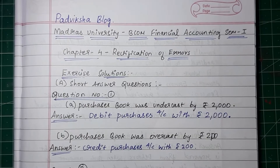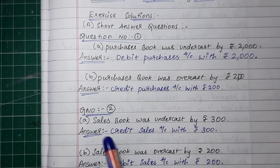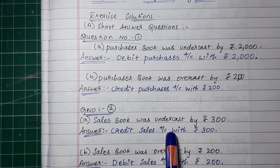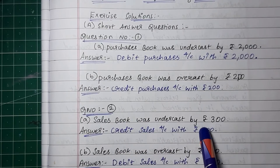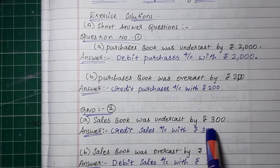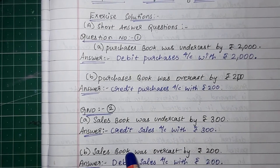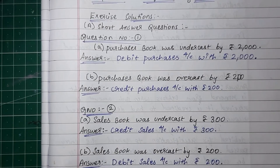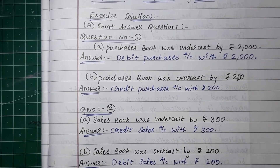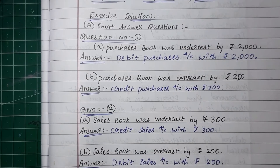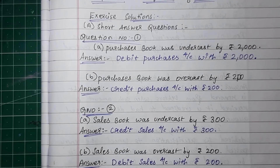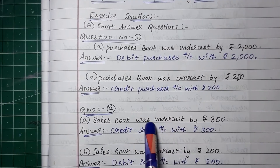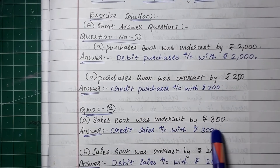Second question: Sales book was undercast by Rs. 300. Sales book is a credit - it is income, a nominal account. So undercast in a credit account means we need to credit it. We credit the sales account with Rs. 300 to correct the undercast.